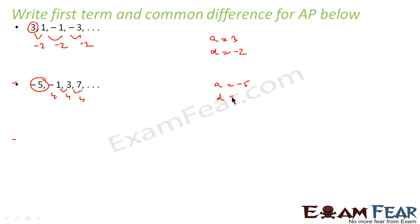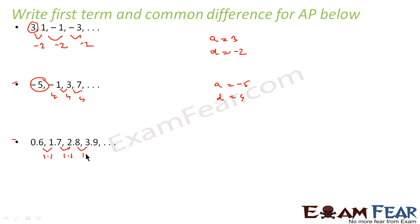My example: 0.6, 1.7, 2.8, 3.9. The difference is 1.7 - 0.6 = 1.1, 2.8 - 1.7 = 1.1, 3.9 - 2.8 = 1.1. The difference is 1.1 everywhere, and the first term is 0.6. So a = 0.6 and d = 1.1. If you have the series you can find the common difference and first term, and vice versa.